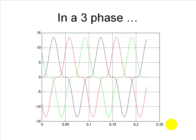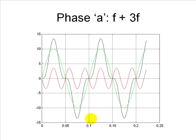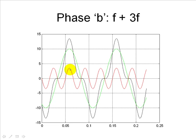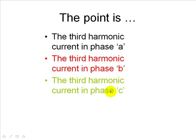We continue where we left off in our previous video, with the magnetization currents for phases A, B and C of a three-phase transformer. Each one of them has a fundamental component and a triple frequency component — 60 Hz and 180 Hz correspondingly. The magnetization current for phase A is shown in black, the 60 Hz fundamental component in green, and the triple frequency component in red — for phase A, phase B, and phase C. The key point is that the third harmonic currents in phases A, B, and C are all in phase with each other.